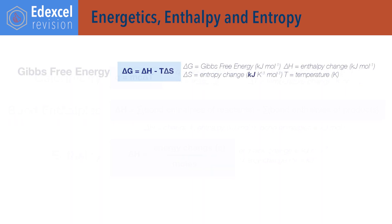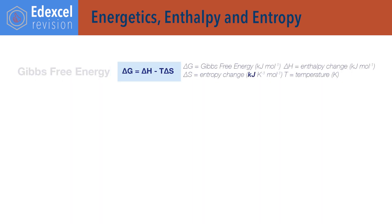Delta G equals delta H minus T delta S, where delta G is change in Gibbs free energy in kilojoules per mole, delta H is change in enthalpy in kilojoules per mole, T is temperature in kelvin, and delta S is change in entropy. Note that the units of entropy are usually in joules per kelvin per mole; however, in this equation, change in entropy must be given as kilojoules per kelvin per mole — divide delta S by 1000 to do this.